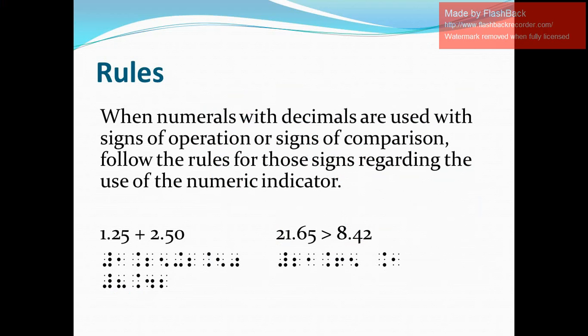For our next example, we have 21.65 is greater than 8.42. In Nemeth, we write the numeric indicator, digits 2 and 1, decimal point, digits 6 and 5, then a space, the greater-than symbol (dot 4-6 in the first cell and dot 2 in the second cell), then a space, and then we need to write the numeric indicator, digit 8, decimal point, digits 4 and 2.